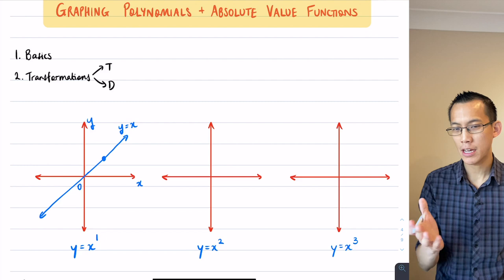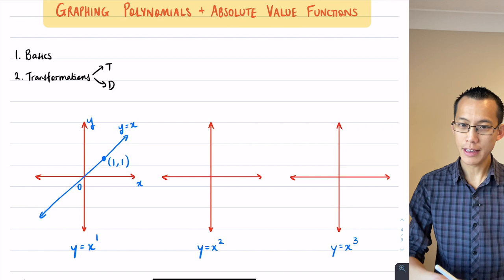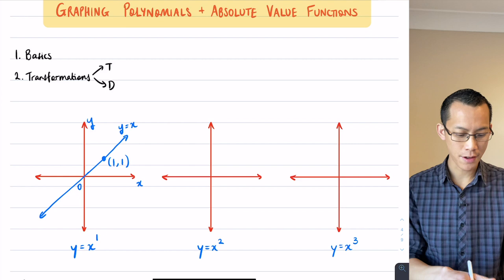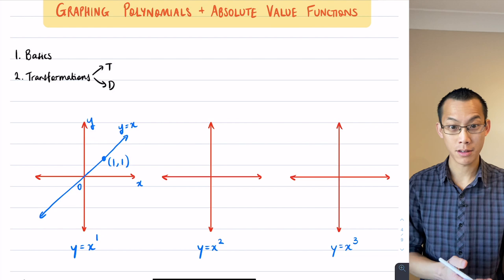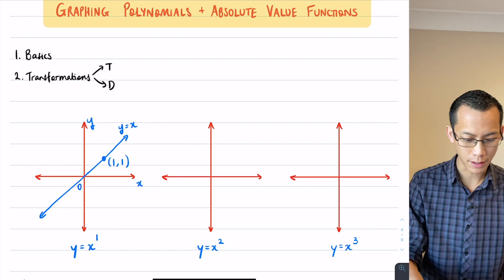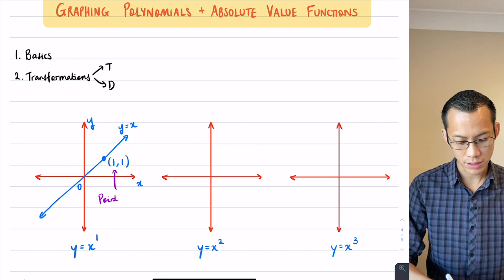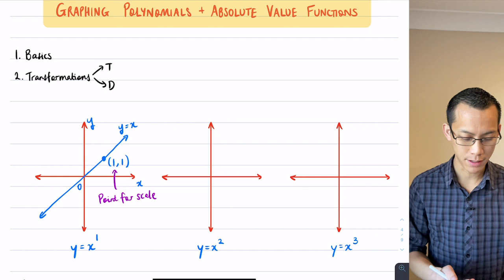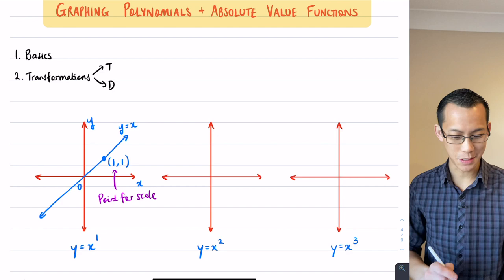As an example, I know that (1,1) is going to sit on this line, and now that I've put this point for scale onto the graph, I know this can't be y = 2x because it doesn't pass through that point, can't be y = 3x because it doesn't pass through that point, you get the idea. I call this a point for scale—I'm going to label it as such. You might hear other people call this a locking point because it sort of locks in where the graph goes, but I call it a point for scale because it's a point that tells you what the scale of the graph is.